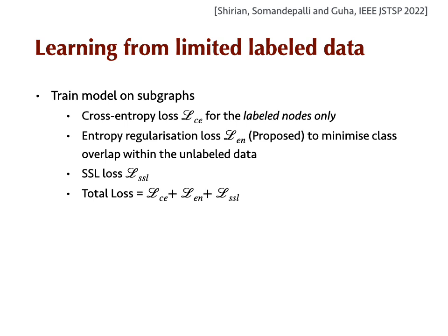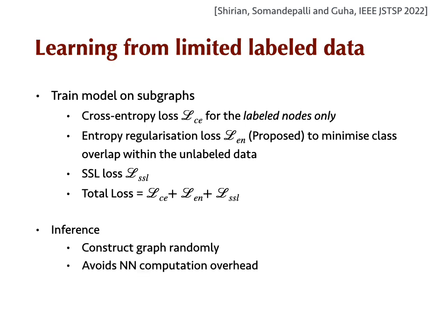In the loss function, we have the SSL loss which takes care of the SSL branch, and there's cross-entropy loss to consider the classification loss for the labeled nodes. For nodes that are not labeled, we have something we propose called the entropy regularization loss, and this loss will try to minimize class overlap within the unlabeled data. Another important point is that although we construct these subgraphs carefully during training, during inference time we don't want the overhead of constructing nearest neighbors, so we construct the graphs completely randomly. We also have some probabilistic constraints to guide how many edges we should have.